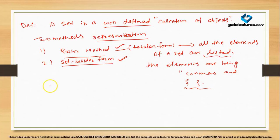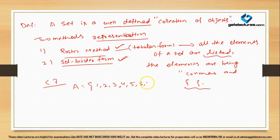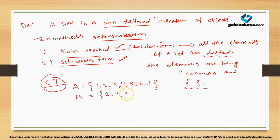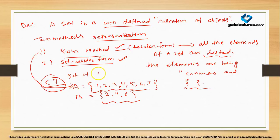For example, the set of all positive integers less than 7 is {1, 2, 3, 4, 5, 6, 7}. The set of all even positive integers less than 7 is {2, 4, 6}. This form is known as the roster form.